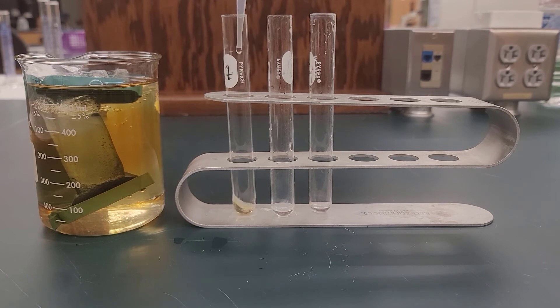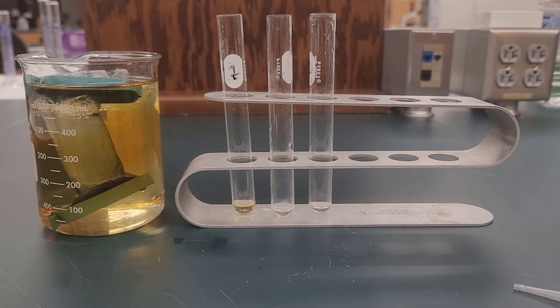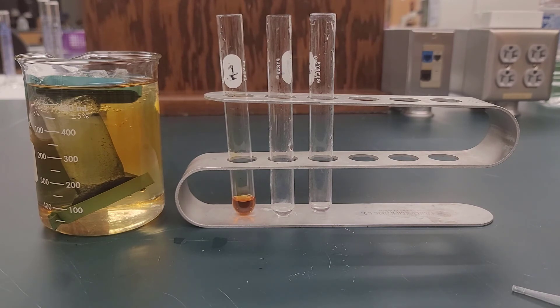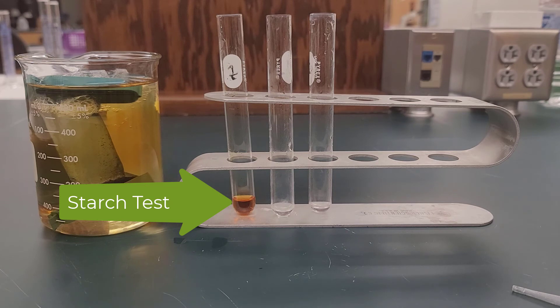Now we'll take a sample from the beaker to see if the other chemicals came out. We take a sample from the beaker and we're going to first test for starch, so we put some iodine in, and that's our result there.